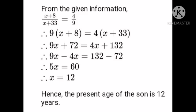Therefore, 9 into x plus 8 is equal to 4 into x plus 33. So 9x plus 72 is equal to 4x plus 132. Therefore, 9x minus 4x gives 5x is equal to 132 minus 72 is equal to 60. So x is equal to 60 upon 5 is equal to 12. Hence, the present age of the son is 12 years.